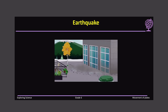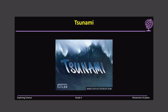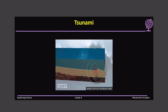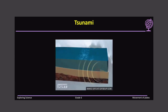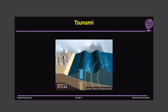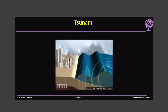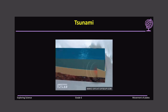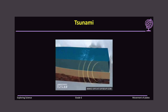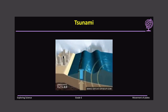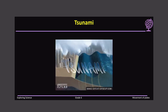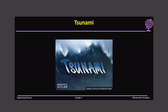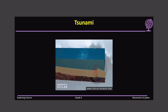In this tsunami video, you can see two plates collide with each other and one plate moves on top of the other, releasing energy into the crust, and a huge wave is created — that is how a tsunami happens.